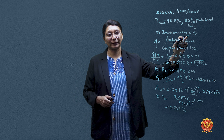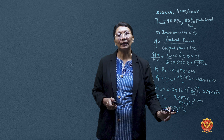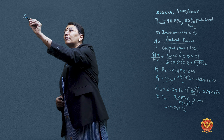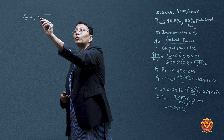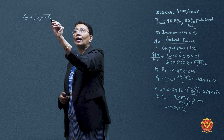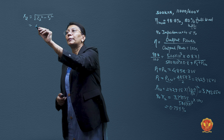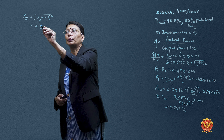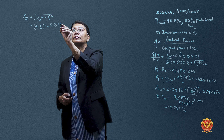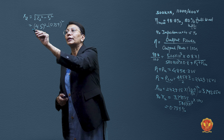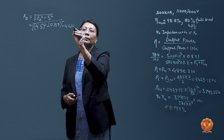With impedance Z = 4.5% and resistance R = 0.759%, we can find the percentage reactance using: X = √(Z² − R²) = √(4.5² − 0.759²). Taking the square root gives us a percentage reactance of 4.435%.